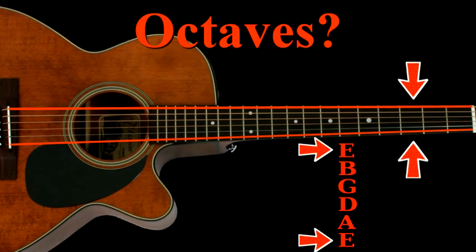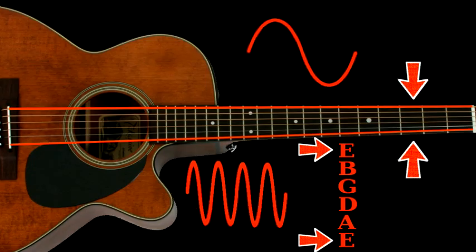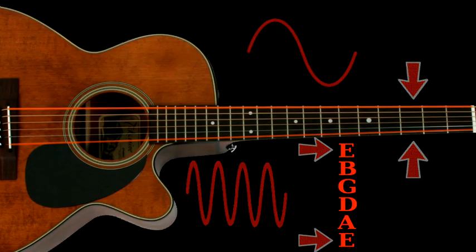It's not important to know what an octave is in order to read guitar tab, but you should know these two E strings produce different frequencies. In other words, they do not produce the exact same sound.